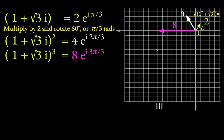And then finally, the whole point of this was to take this to the fourth power. So we just do it again. Multiply by 2, rotate by another 60 degrees. And you see now the thing is 16 units long and at an angle of 4 pi over 3 or another 60 degrees here.